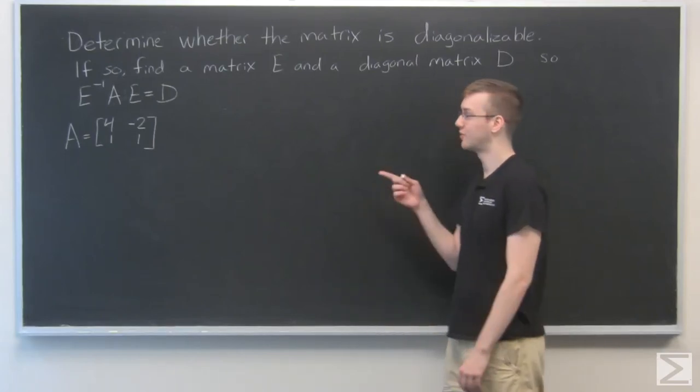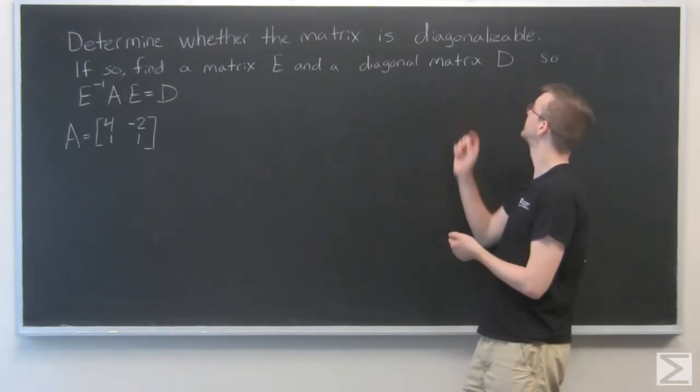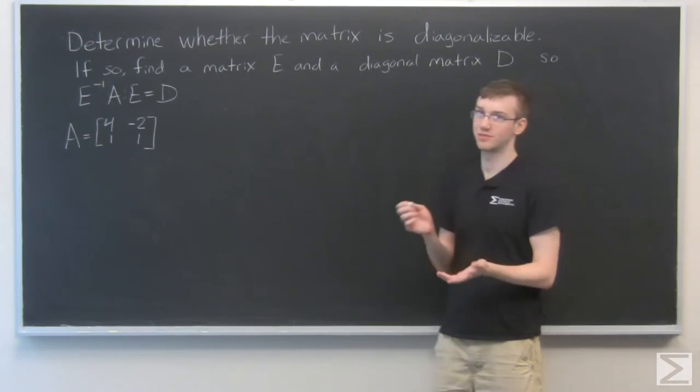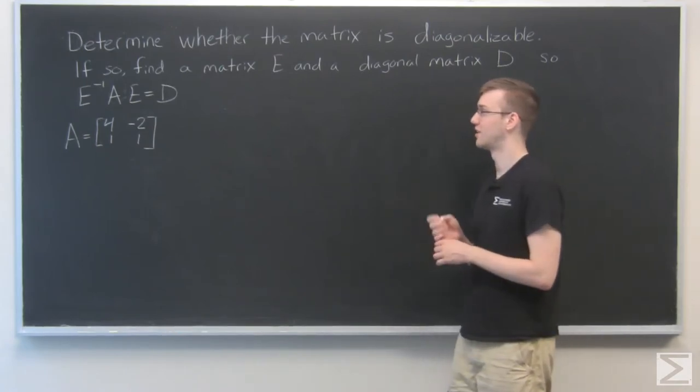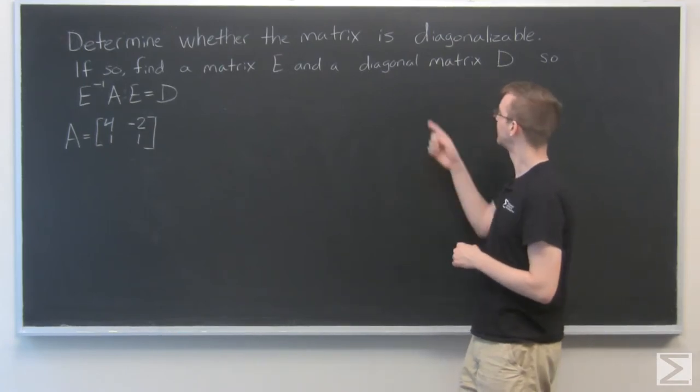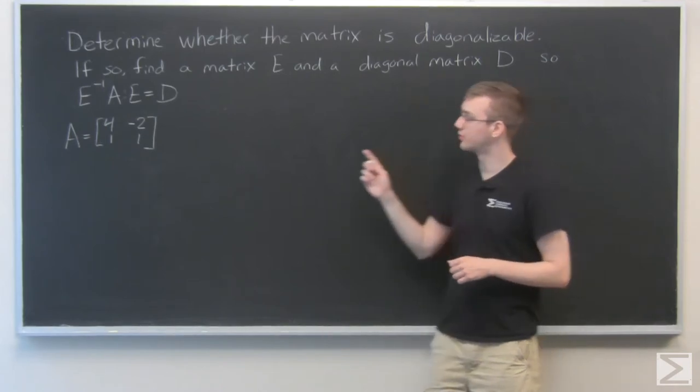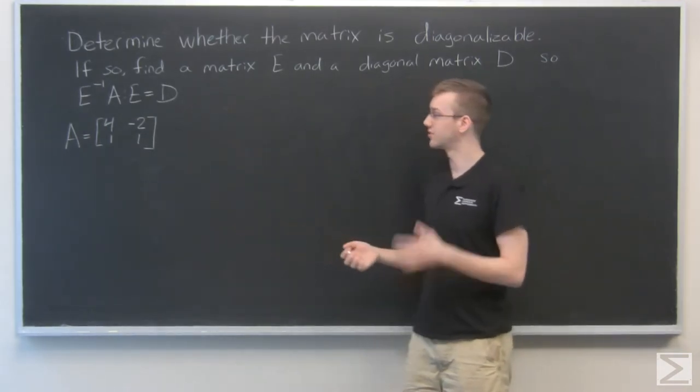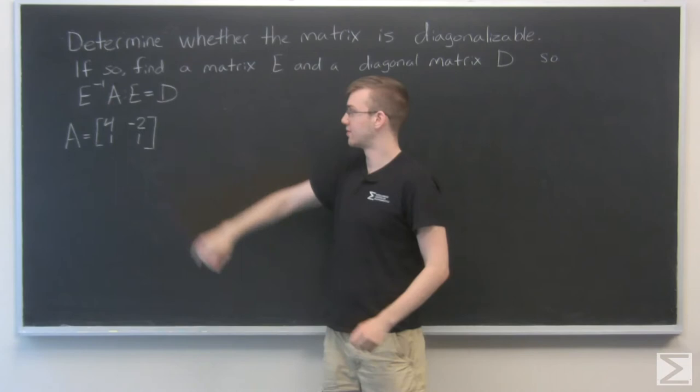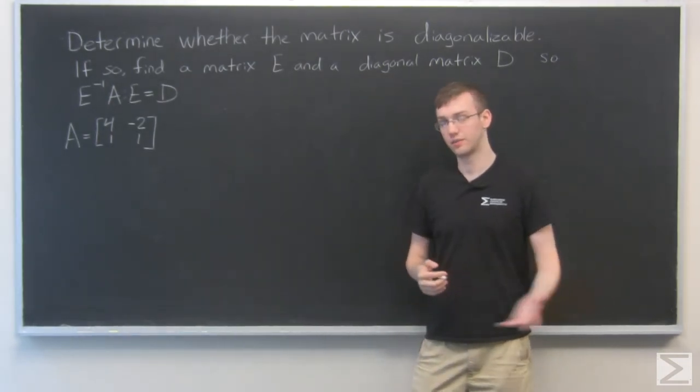For this problem, we need to determine whether the matrix A is diagonalizable. That's a difficult word to say. And if so, we need to find a matrix E and a diagonal matrix D so that we have this relation, E inverse times the original matrix A times E is equal to that diagonal matrix D.